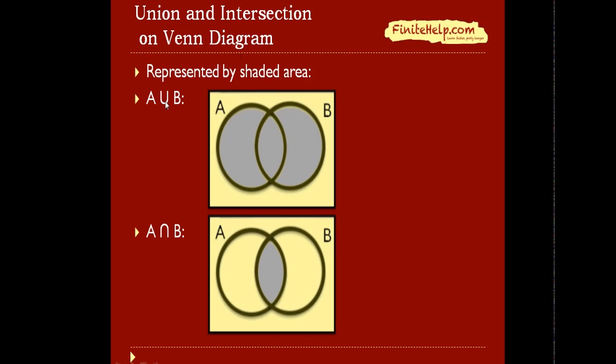To represent a union, you would include everything that is in A or in B. So here you can see the shaded area is A union B.